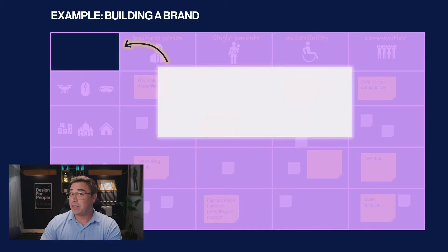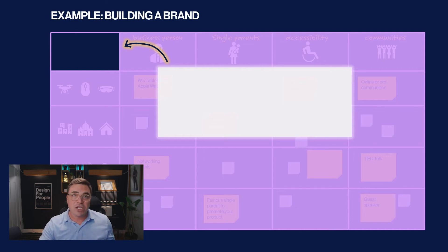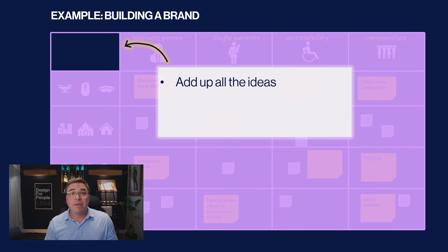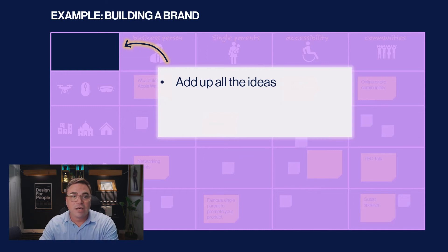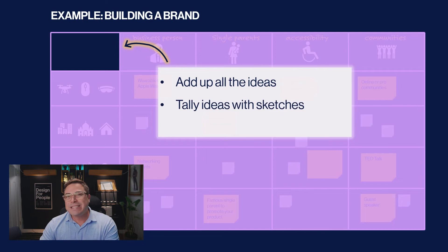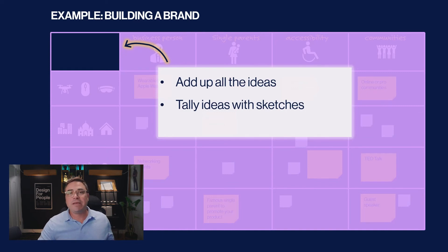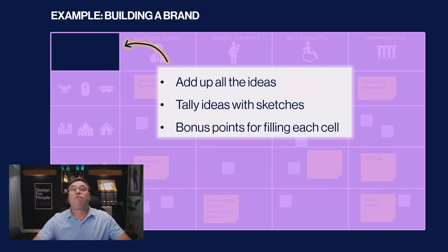Now, that last little box — the little surprise — I like to use as a fun competition among me, my clients, and my team about how many ideas we can generate. We add up all the ideas, and it's a great reminder of the work we can do in such a short amount of time. Typically, four to five people working straight for 45 minutes can come up with over a hundred ideas. Next, we tally ideas with sketches — counting ideas that actually have sketches alongside them. And I like to add bonus points for those who fill up every single cell in the grid. It's a fun way to encourage a completist attitude.